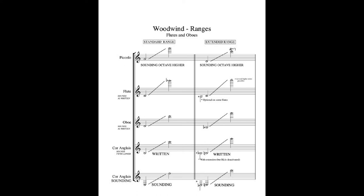The oboe overlaps with the flute but has a different color because of the double reed. It goes from D right above middle C to the C above the staff. It's a little more limited in range than the flute, and as you get higher it gets very pinched — it sounds strained. It can go above that C, but you don't want to go too far, and depending on the instrument it can also go below that D down to B-flat.